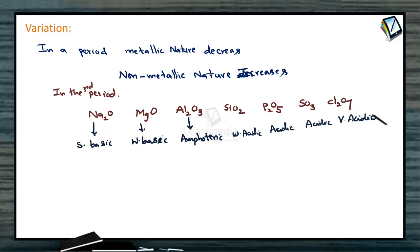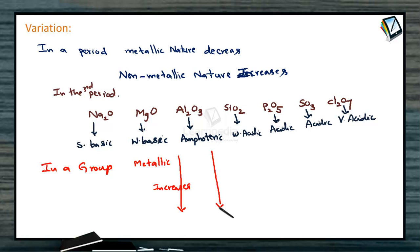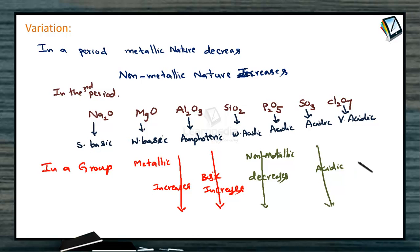In a group, the valence electrons are the same but the size of the atom increases from top to bottom, so metallic nature increases and non-metallic nature decreases. Therefore, in a group, basic nature increases and acidic nature decreases. As metallic nature increases going down a group, the basic character also increases, while acidic nature decreases.